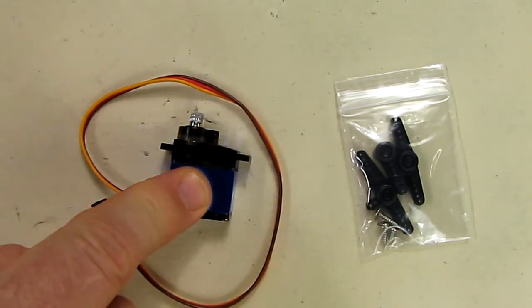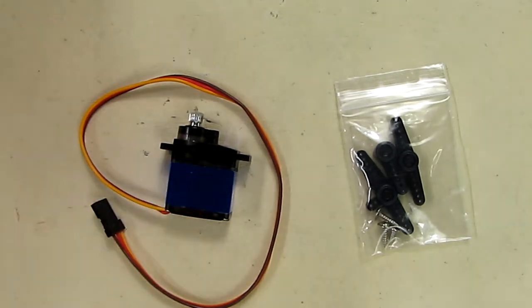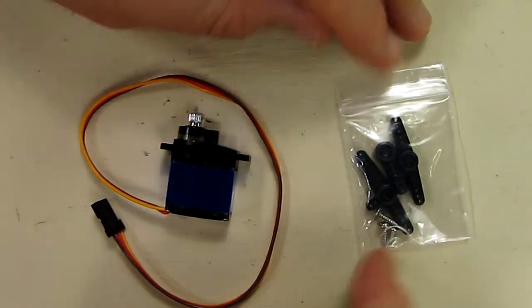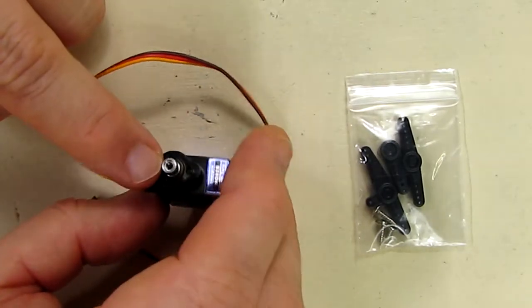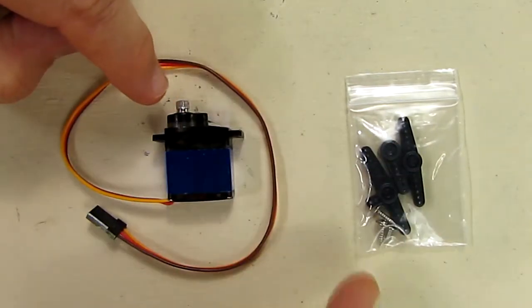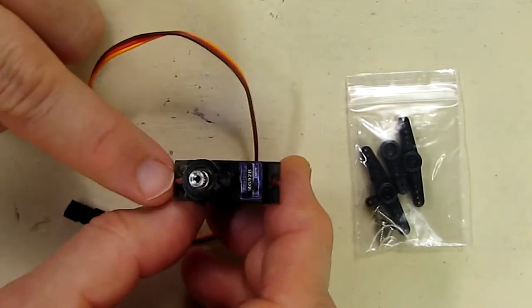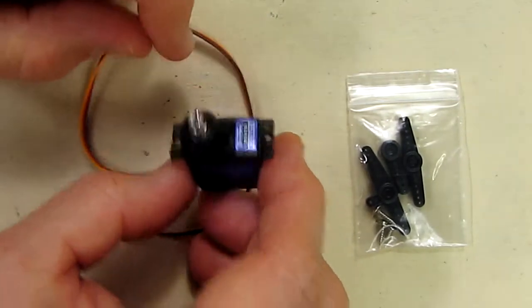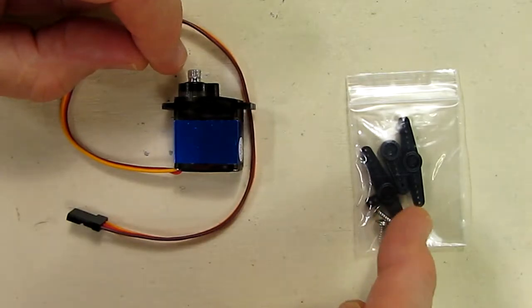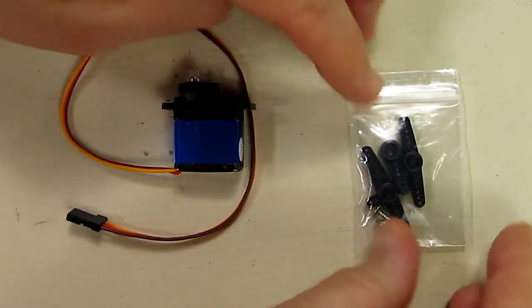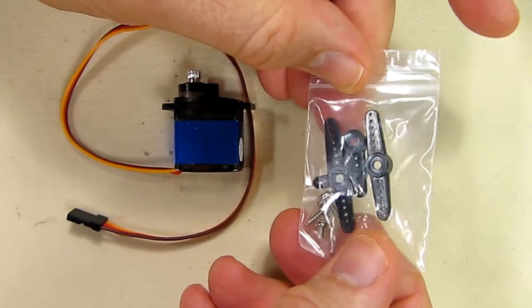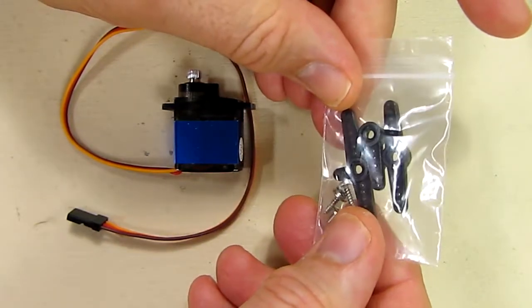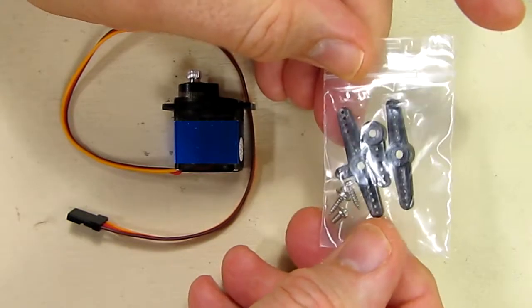The part number is A-537. It comes with a little package which has the screw to hold the nylon horn on, two wood screws to mount the servo itself, and three different arm sizes: one with arms going off both directions, one with one direction, and one with three legs to tap off of.